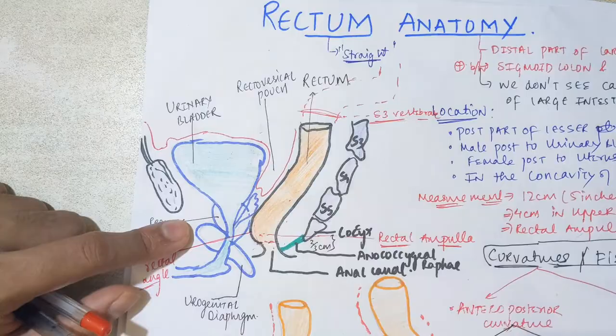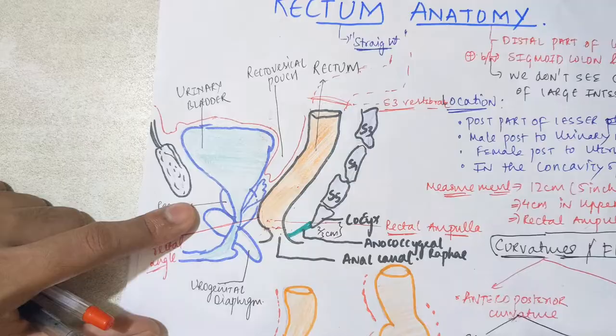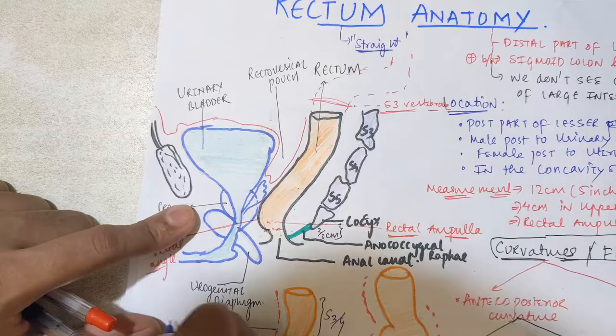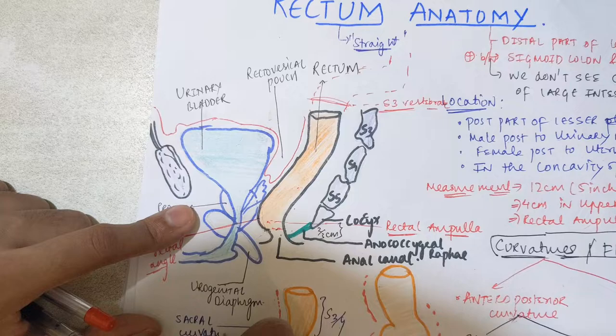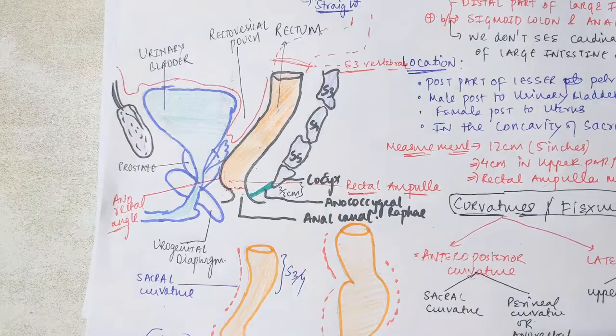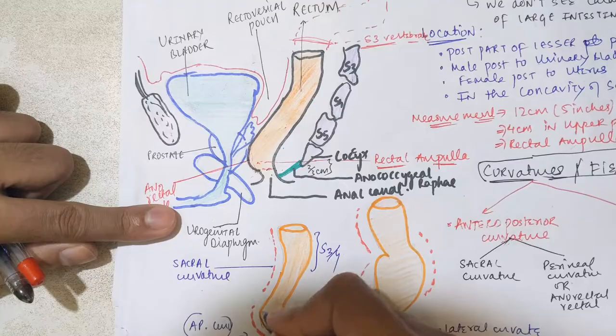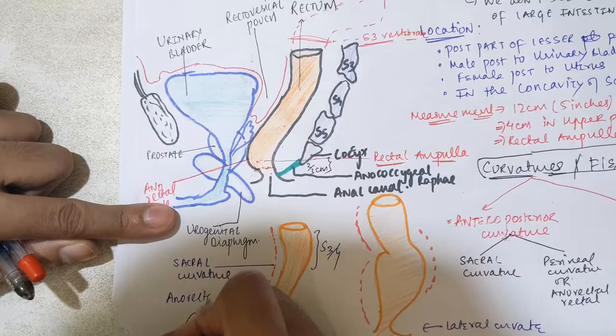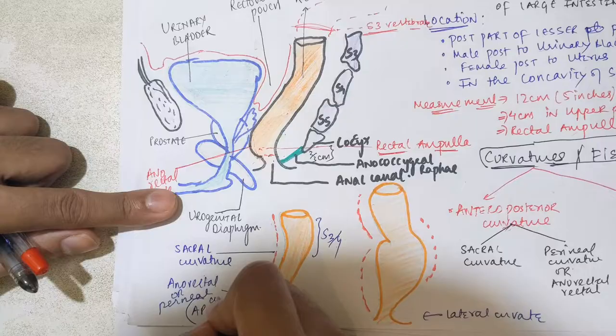The sacral curvature: the rectum in its upper part sits in the concavity of the sacrum, around the level of S3 and S4 vertebrae. This concavity forms the sacral curvature on the anterior-posterior aspect. The second curvature in the anterior-posterior plane is the perineal curvature, visible as a convexity anteriorly. The angle this creates is called the anorectal angle, and the curvature is called the anorectal curvature or perineal curvature.